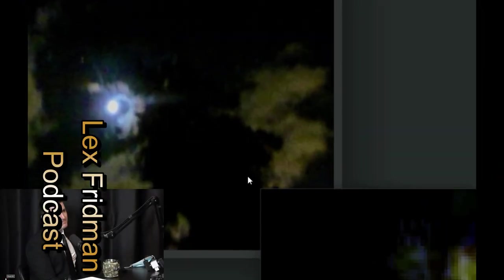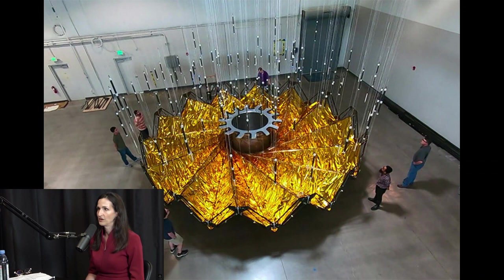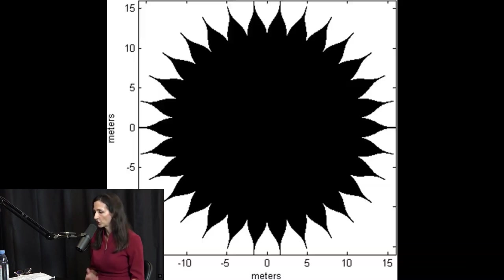Well, first of all, we want to find the planets like Earth first. Like, just even finding those Earth-like planets is a billion-dollar endeavor. Billions of dollars endeavor. And that's so hard because an Earth is so small, so less massive, and so faint compared to our sun.